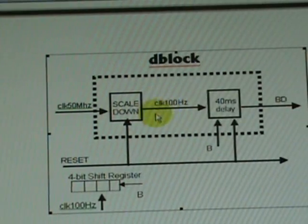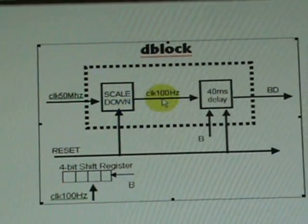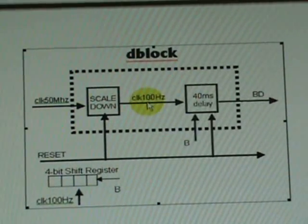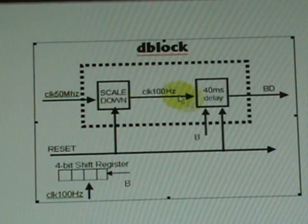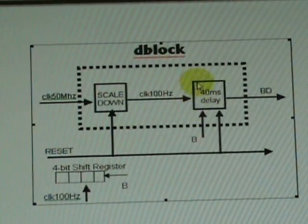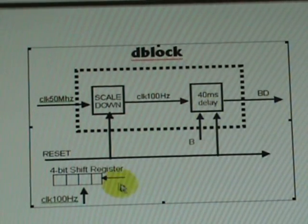by 500,000 to produce a 100 hertz signal. We will use that to clock our 40 millisecond delay, which is our four-bit shift register as shown below.